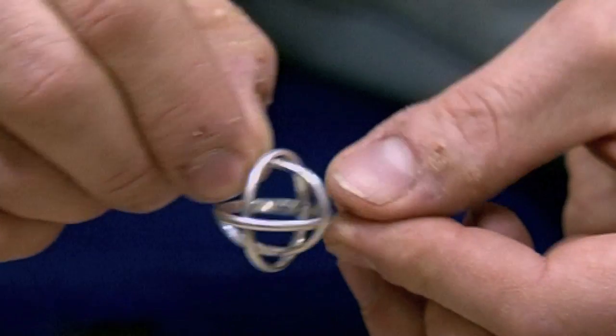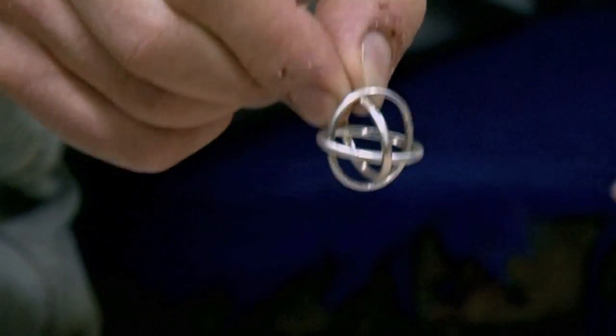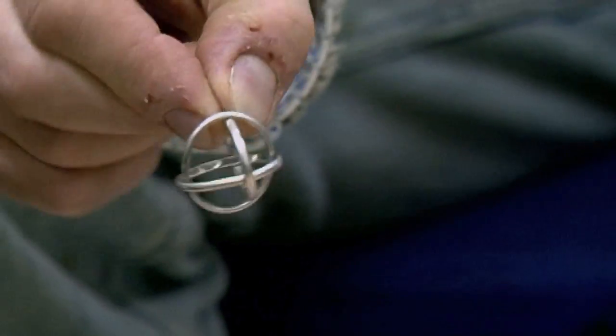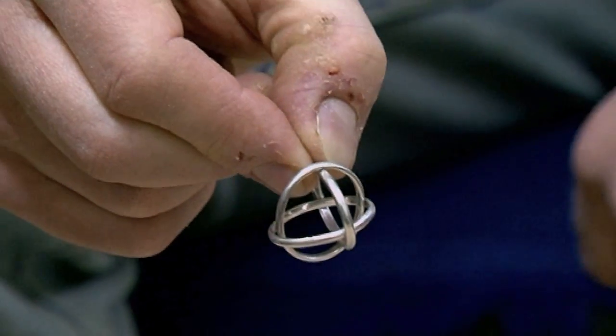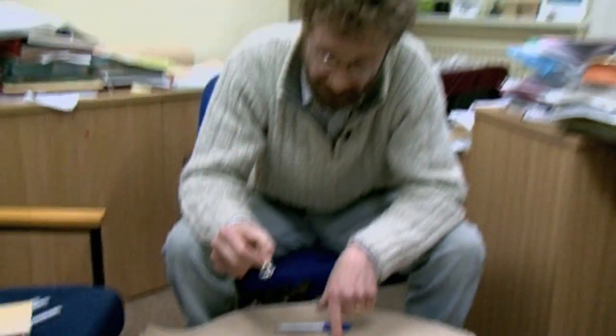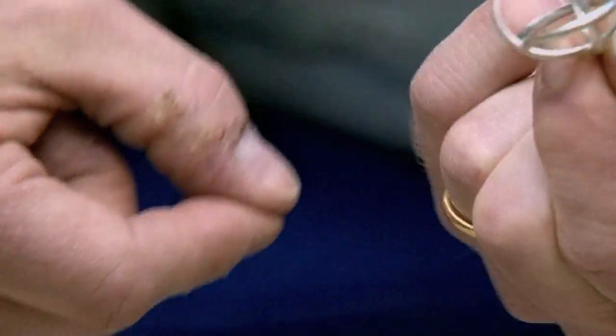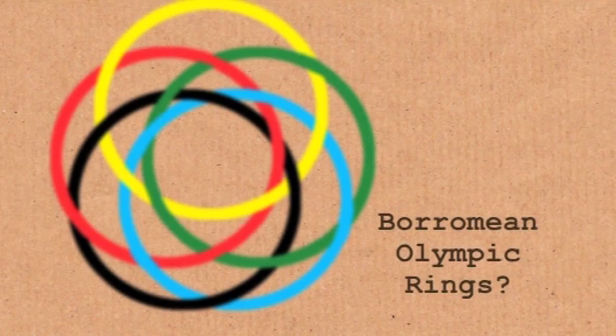So this is an example of what mathematicians call a higher linkage. This is a more complicated way in which three things can be bound together than the two rings. No two rings are linked together in this sense. Does this only work with the number three? No. Once you start playing with these things, you realize you can make a corresponding entity out of any odd number of rings. It has to be odd.